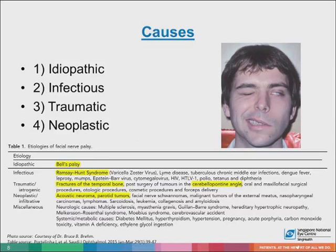This table shows the common causes of seventh nerve palsy. The most common cause is idiopathic, or Bell's palsy. Others include infection such as Ramsay Hunt, trauma like fractures of the temporal bone from an RTA, iatrogenic after CP angle tumor surgery, neoplastic causes such as acoustic neuroma, or even the parotid gland itself compressing on the facial nerve.